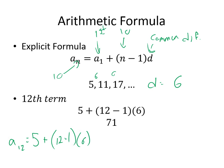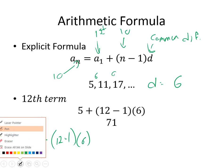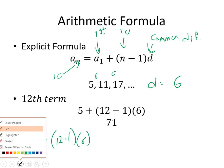When we plug that in, simplify and solve, we get 71 as the 12th term of that sequence. You could do it by hand but it would take a while. This formula lets you do it fairly quickly. You need to know what term you want to find, the first term, and the common difference.